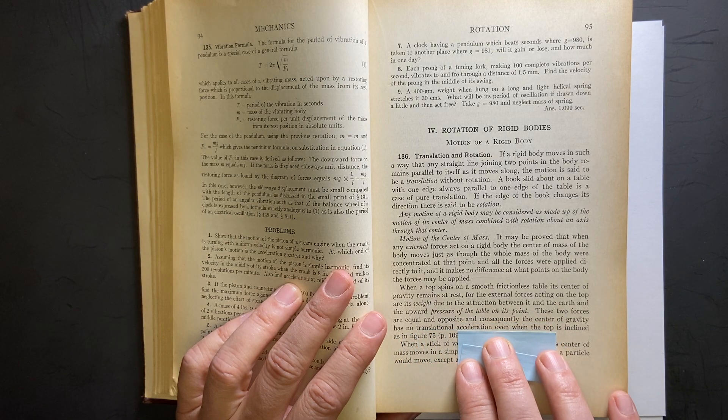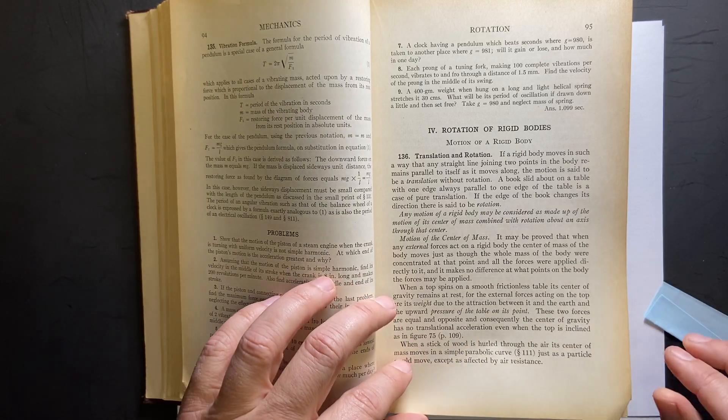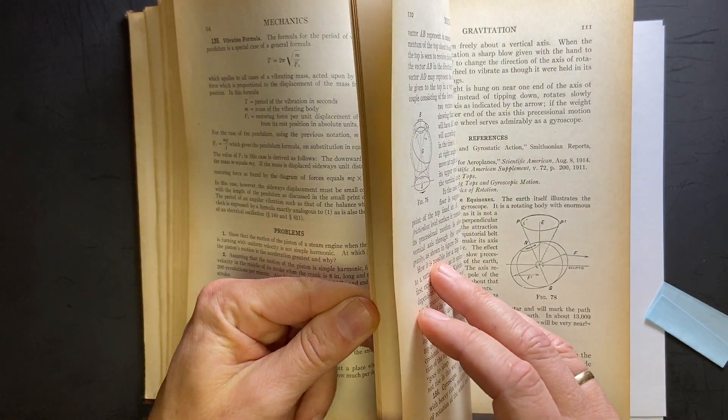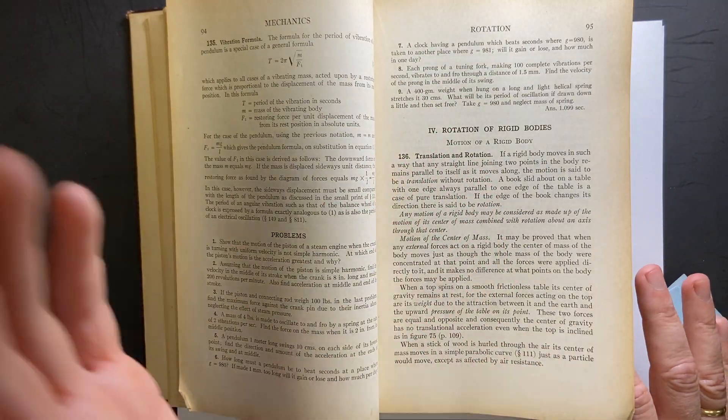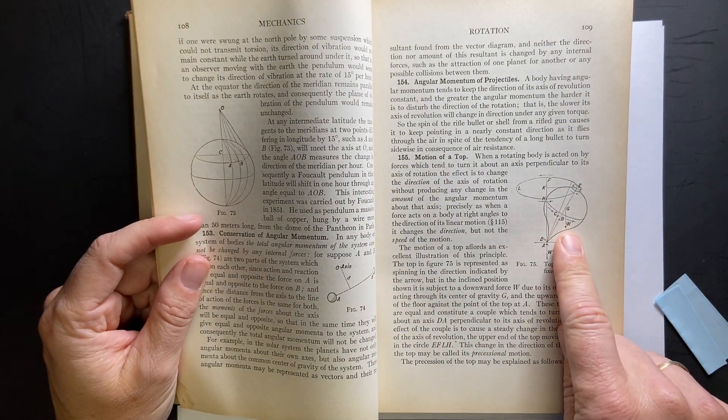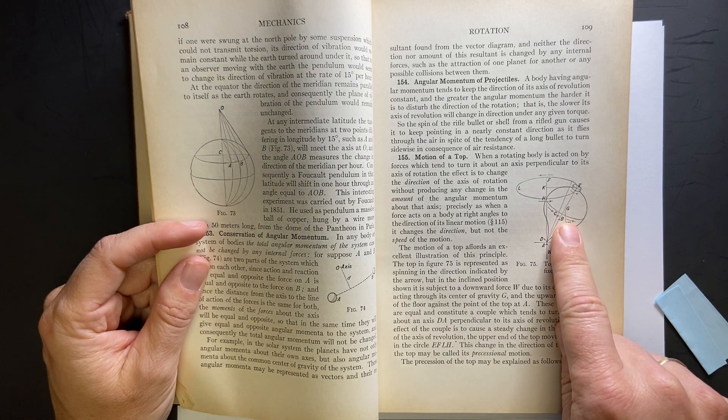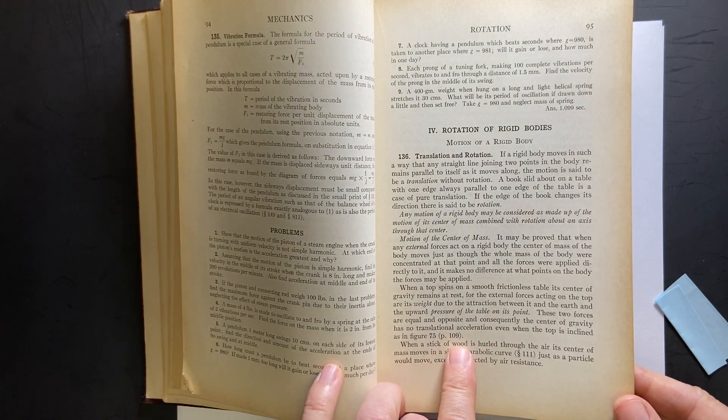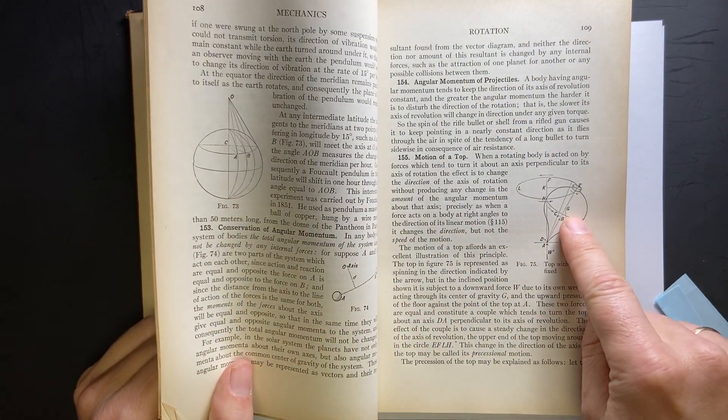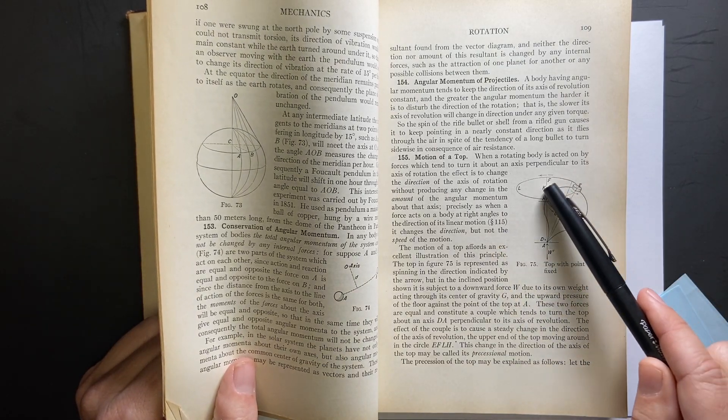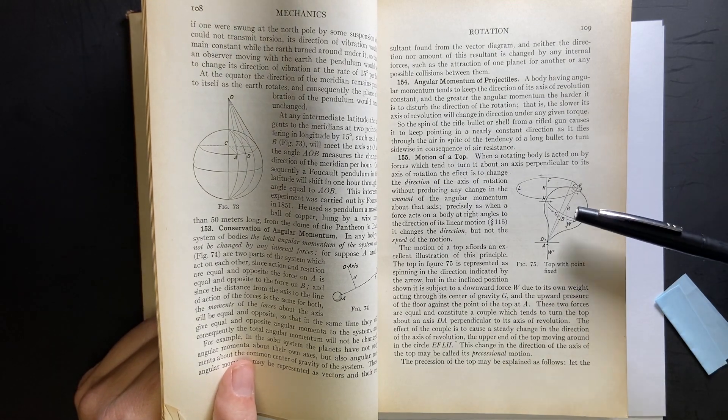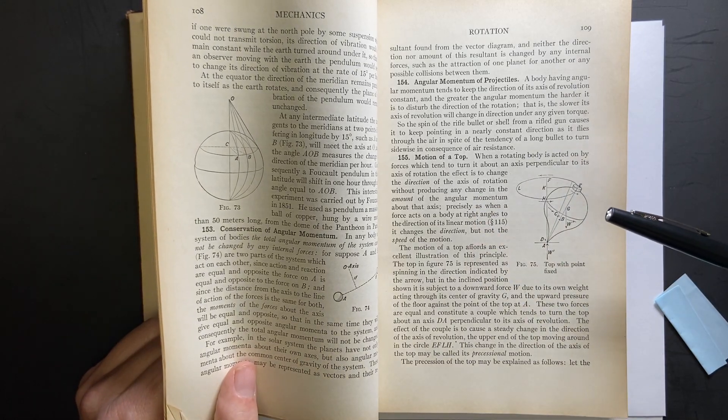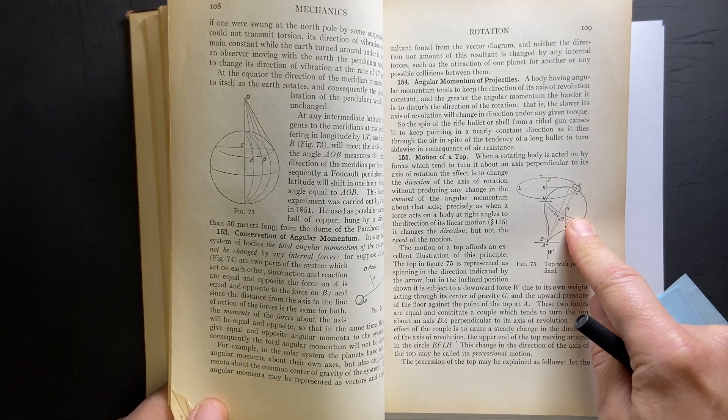These two forces are equal and opposite and, consequently, the center of gravity has no translational acceleration, even when the top is inclined as in figure 75, page 109. Well, that's pretty far ahead. See, this is where a modern textbook just says, oh, it's a sidebar. That's weird. Because if this is the top spinning around, obviously, at an angle like that, the center of gravity is accelerating, right? Because if... Let's say the center of gravity is right here and the top is spinning around this way, then there's a circular acceleration at the very least because the center of gravity is moving in a circle in the wobble part. So, maybe they just didn't want to redraw a picture of this same thing, but it's vertical.